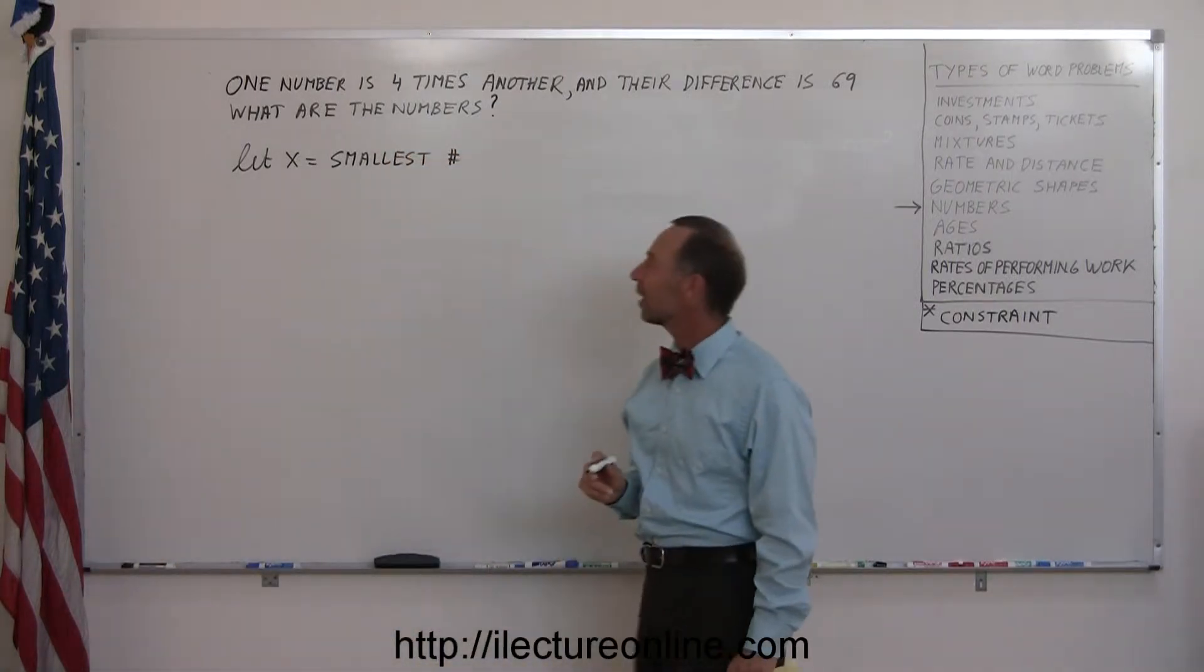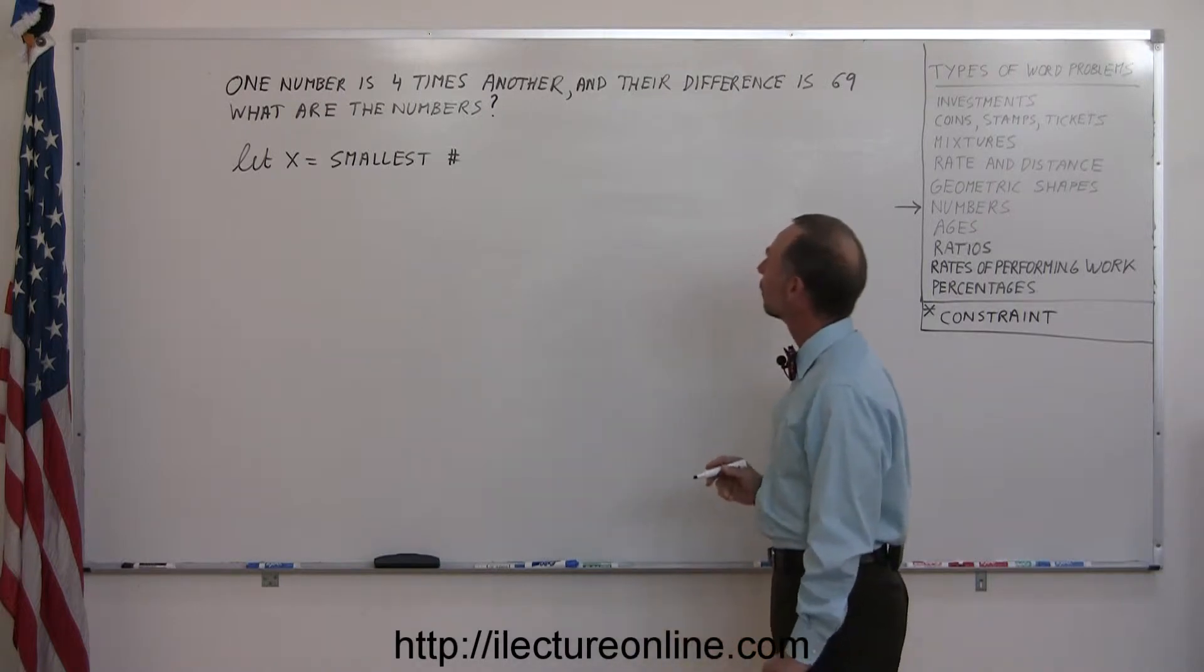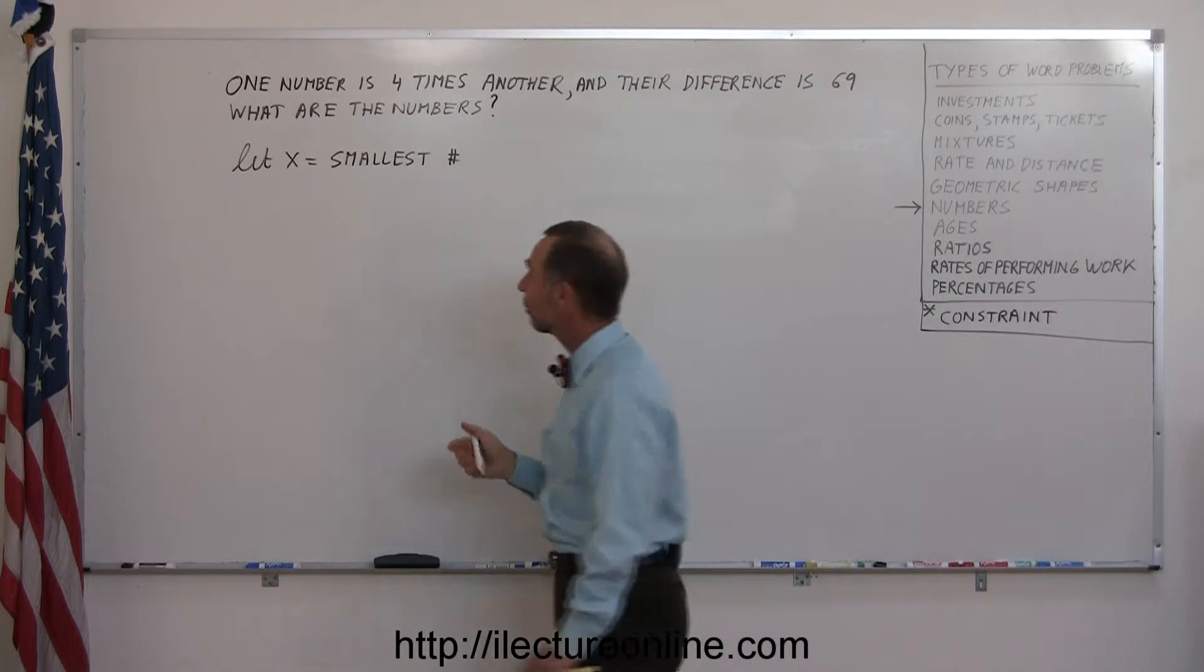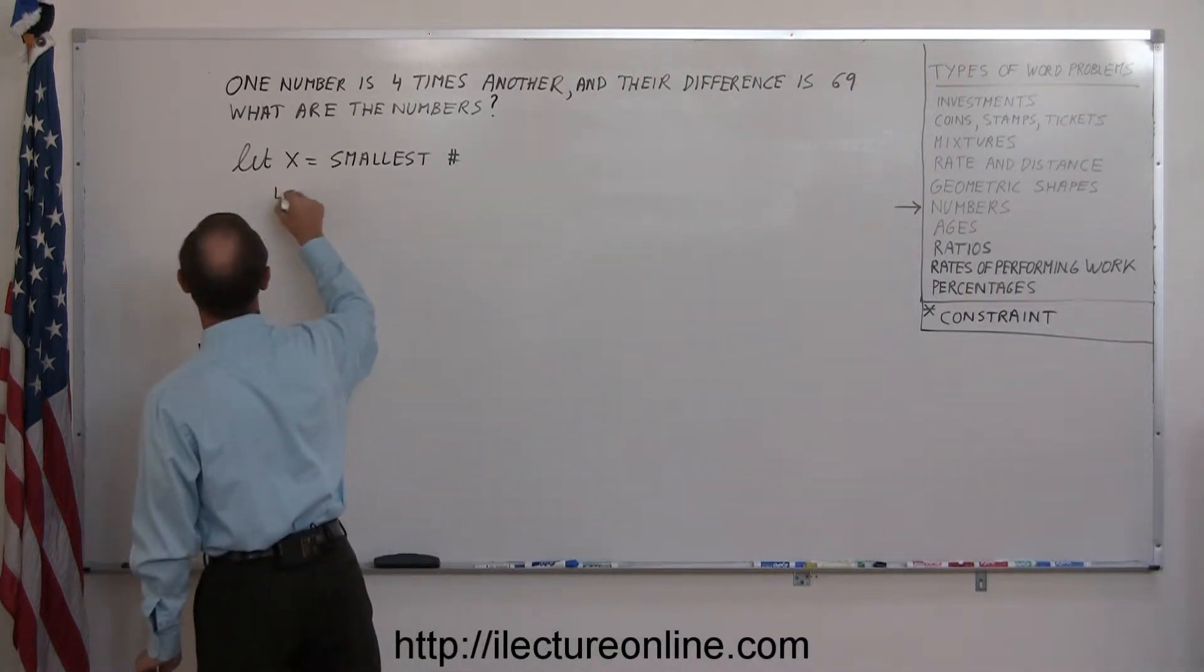So how do we represent the largest of the two? Well, it says that one number is four times the other, so 4x would then represent the larger number. So 4x equals the largest of the two numbers.